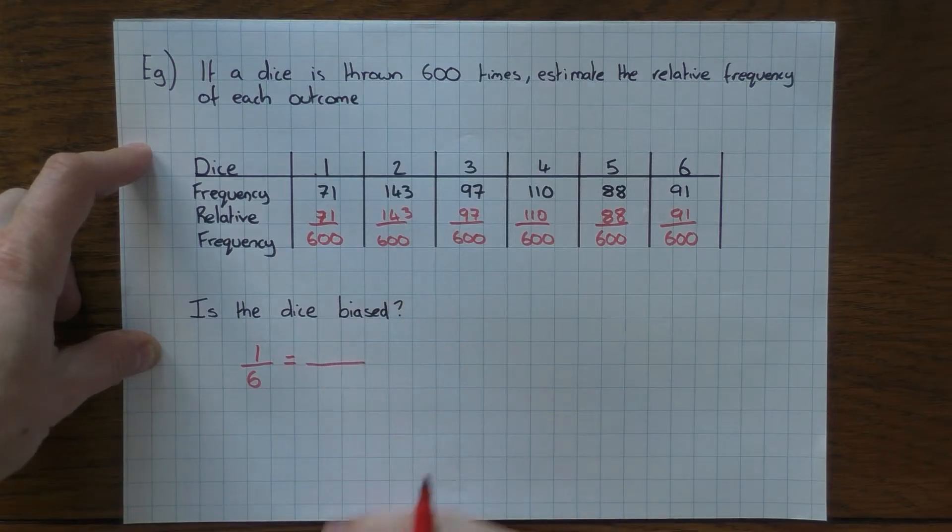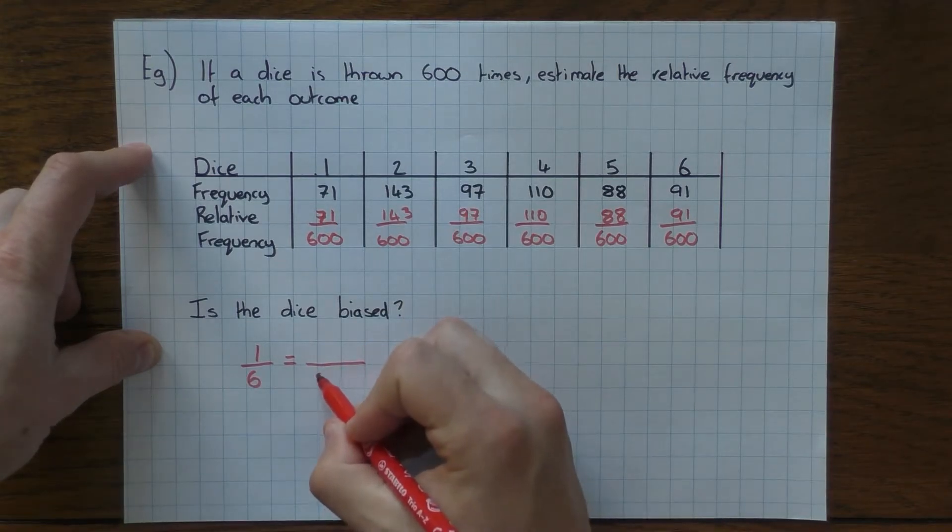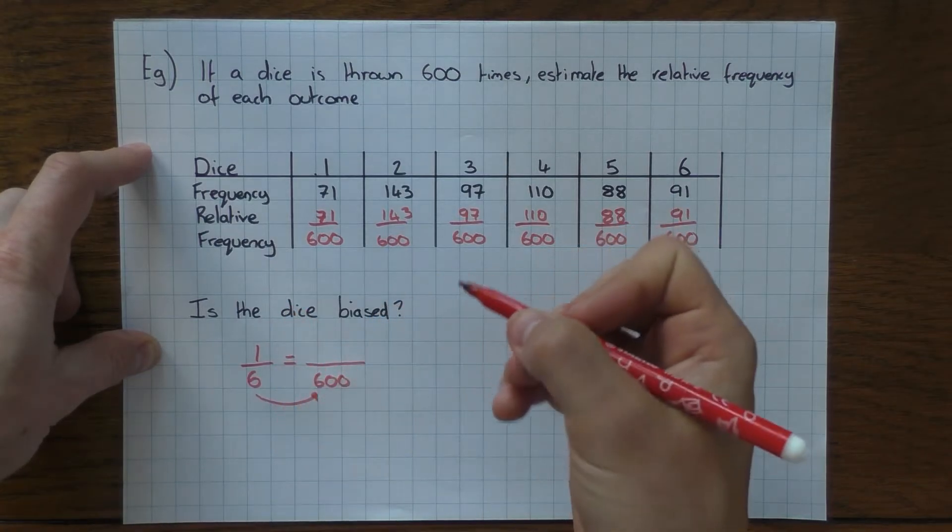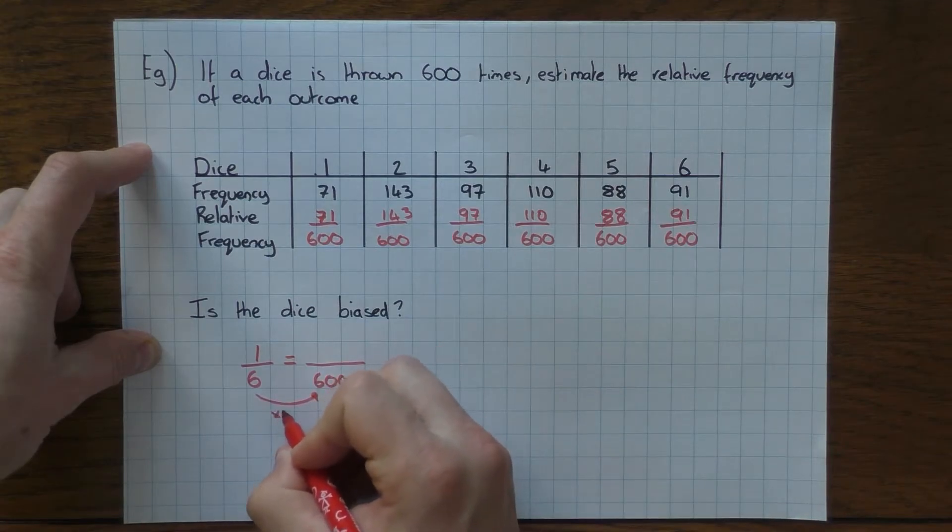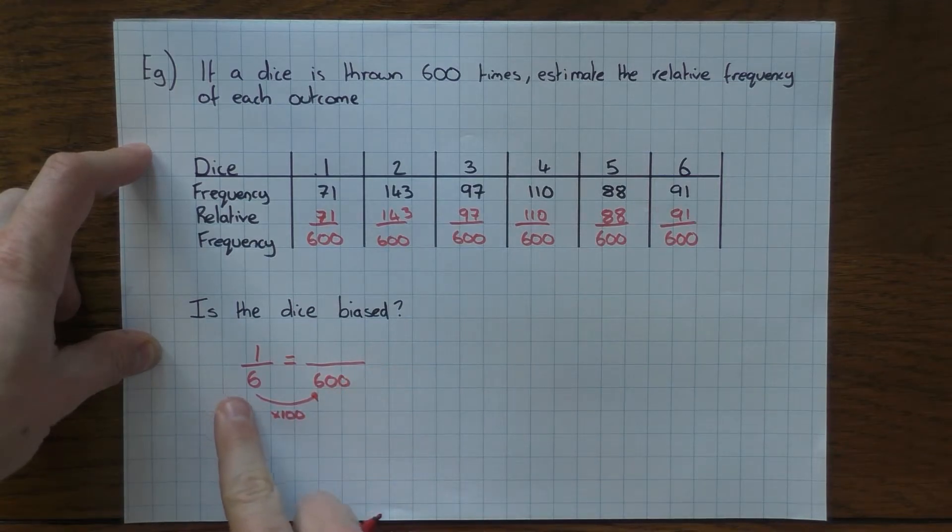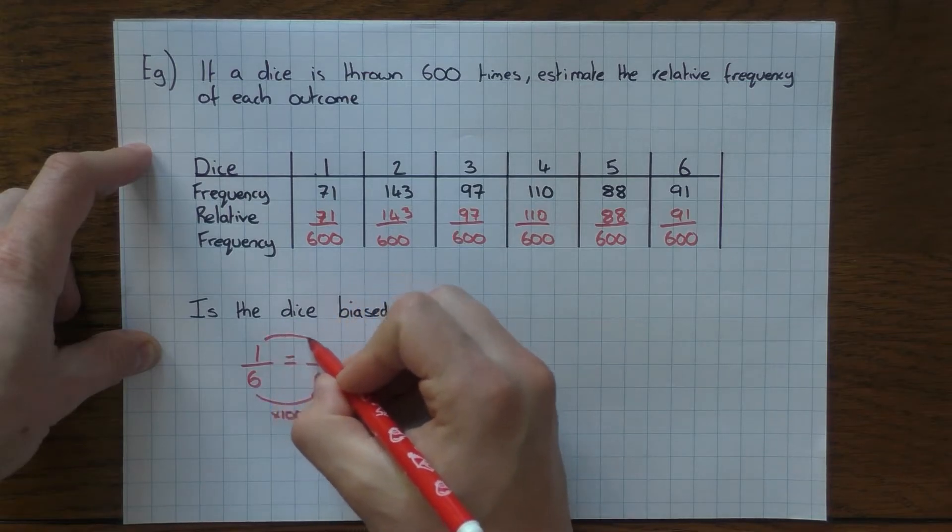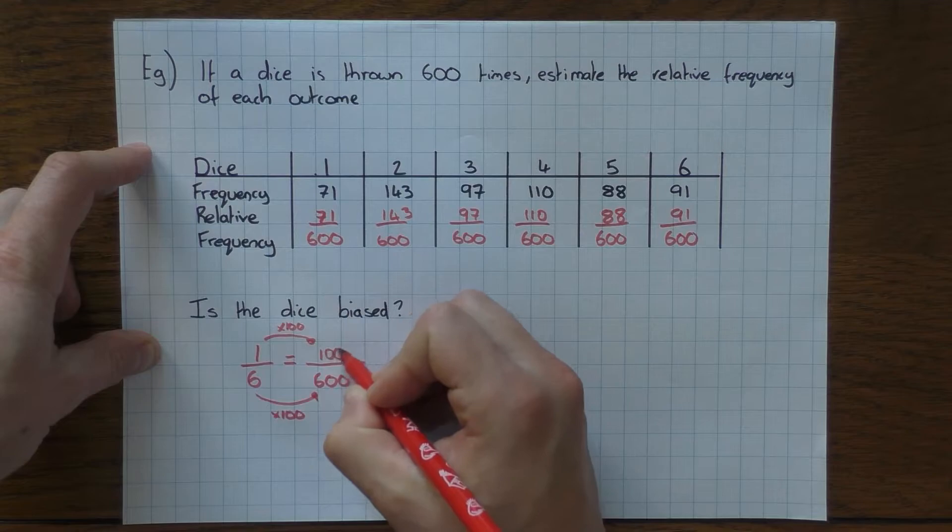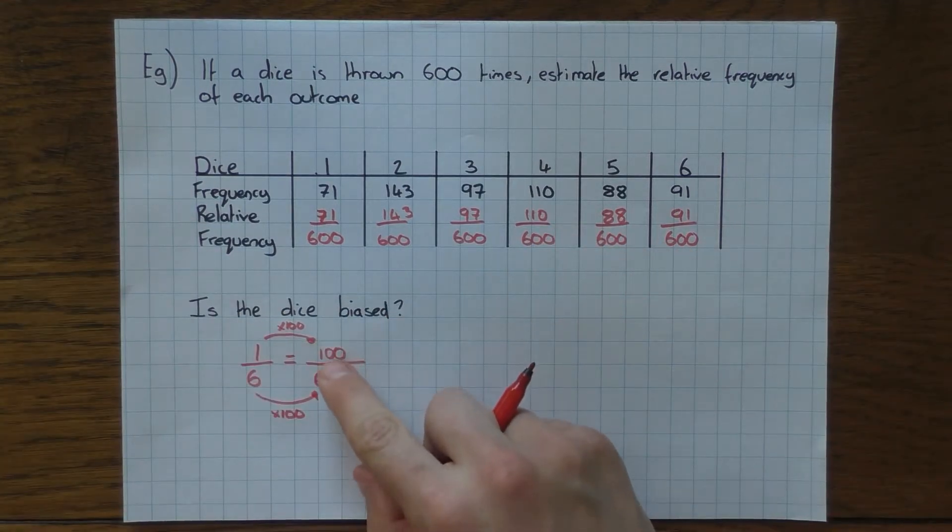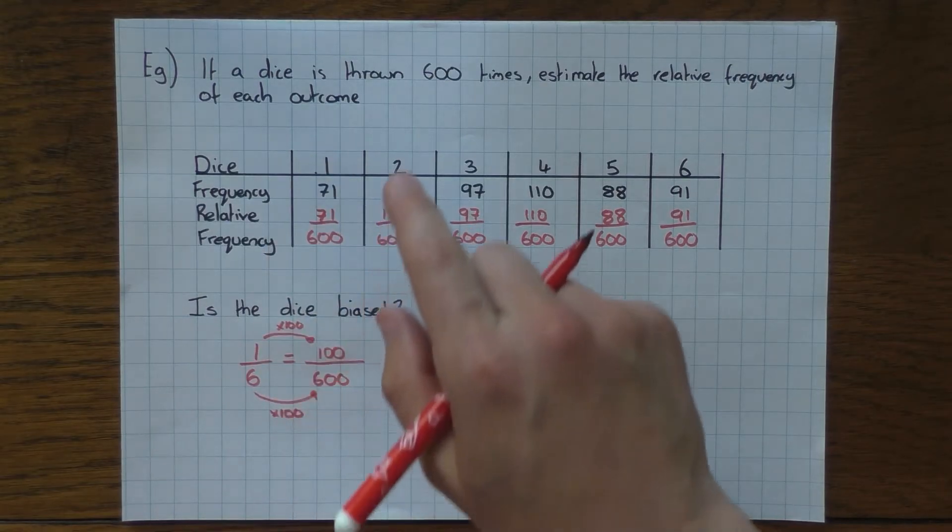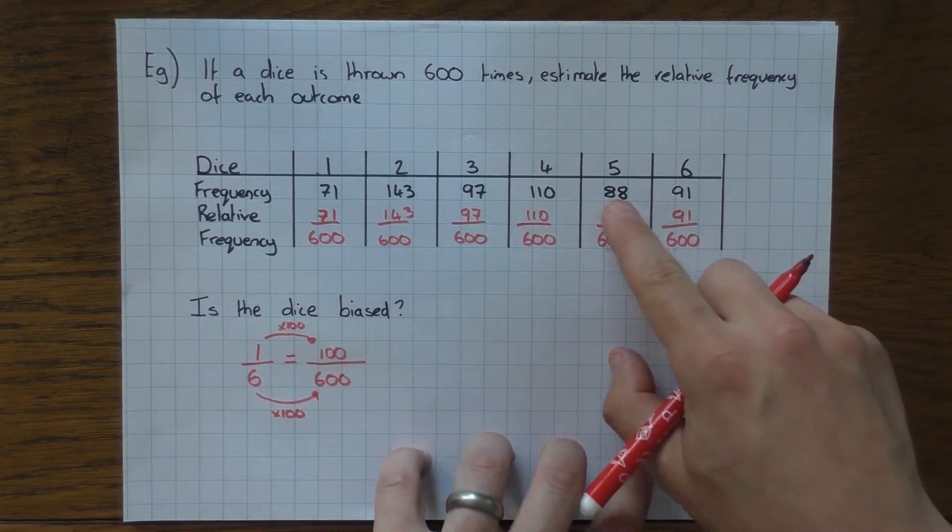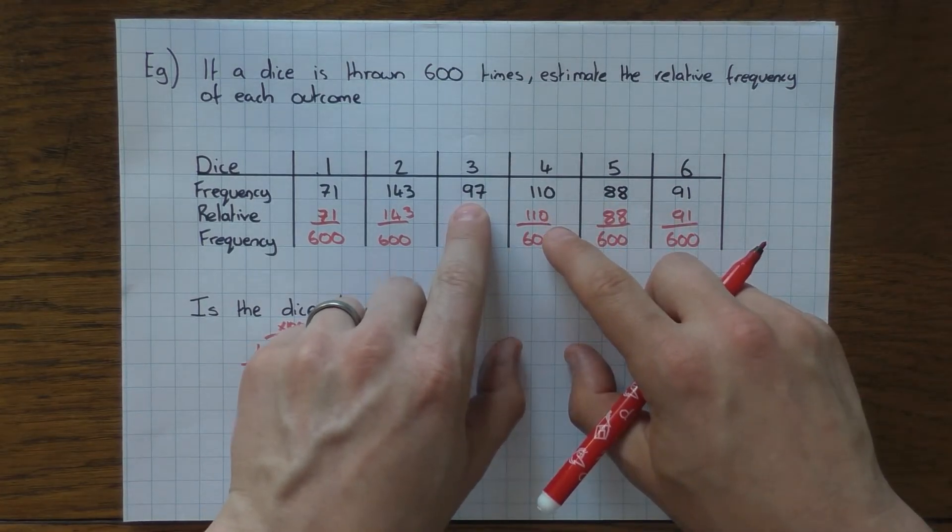If I was to do a fair dice 600 times, how often would we expect it to land on a 1 or a 2 or a 3 and so on? Well, we just do a bit of an equivalent fraction here and times it by 100 to get it over 600, and times that by 100 as well. So if we were to have rolled a fair dice, we would expect to see it 100 times rolling a 1, 100 times rolling a 2, 3, 4, 5, and a 6.